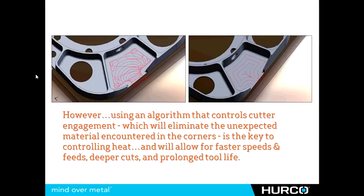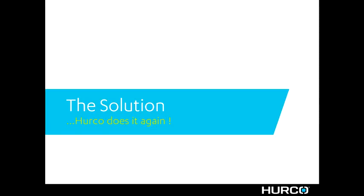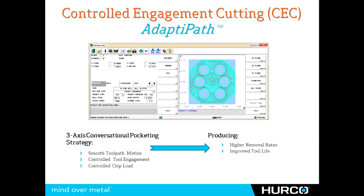What Herco has done to help solve this problem is create something called Adaptive Path — a controlled engagement cutting algorithm that ensures that once we have determined how much material we want the tool to engage, it will never engage more than that amount, even in the corners. It will alter the toolpath to ensure we do not encounter those high-heat, high-pressure situations of the tool burying itself in unexpectedly.